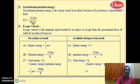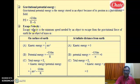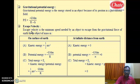The next heading after gravitational potential energy is escape velocity. What is escape velocity? It is the minimum speed needed by an object to escape from the gravitational force of the Earth. This is the meaning and definition of escape velocity.